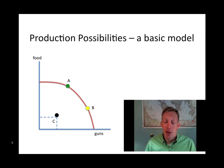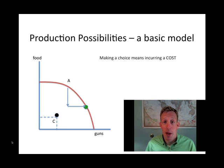The only good thing about being inside the curve is that we can have more of both goods. The problem with being on the curve is that if you want to have more guns, you have to give up some food. This is referred to as a trade-off in economics. Sometimes it's also referred to as a cost. The cost of making a choice. And every choice that we make has costs.